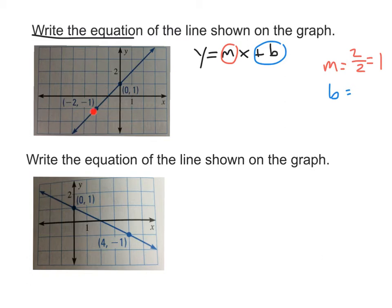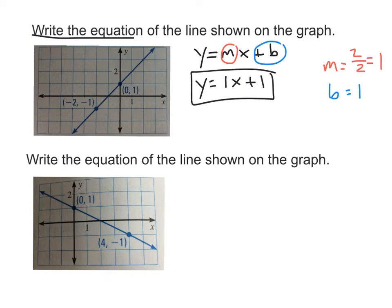Now b is our y-intercept, so we just need to find where the line crosses the y-axis. It crosses at the point (0, 1) — the x value is 0 because the y-intercept always has x equal to 0, and the y value is 1. So our y-intercept is 1. Plugging in: y equals 1x plus 1, or simply y equals x plus 1.